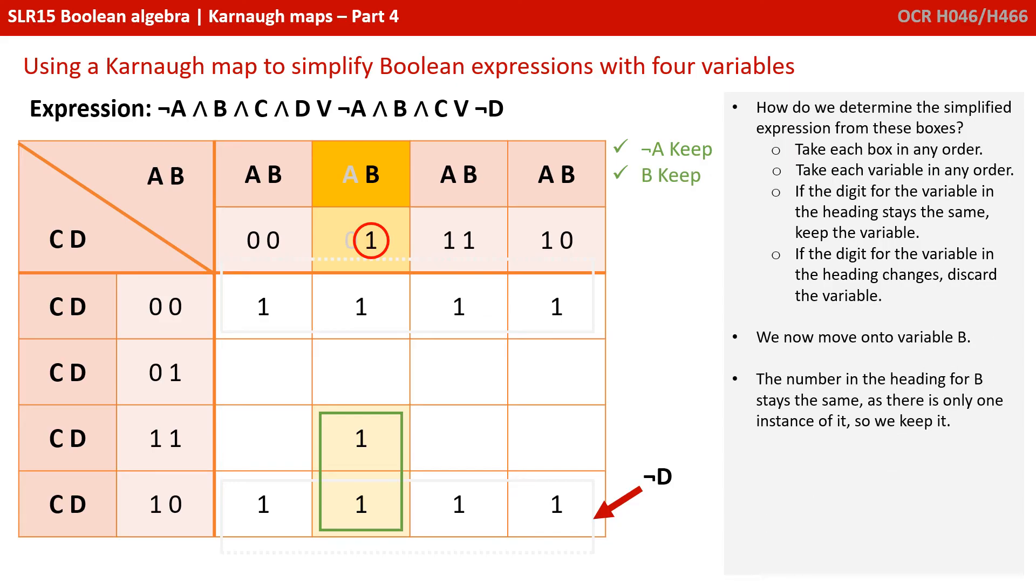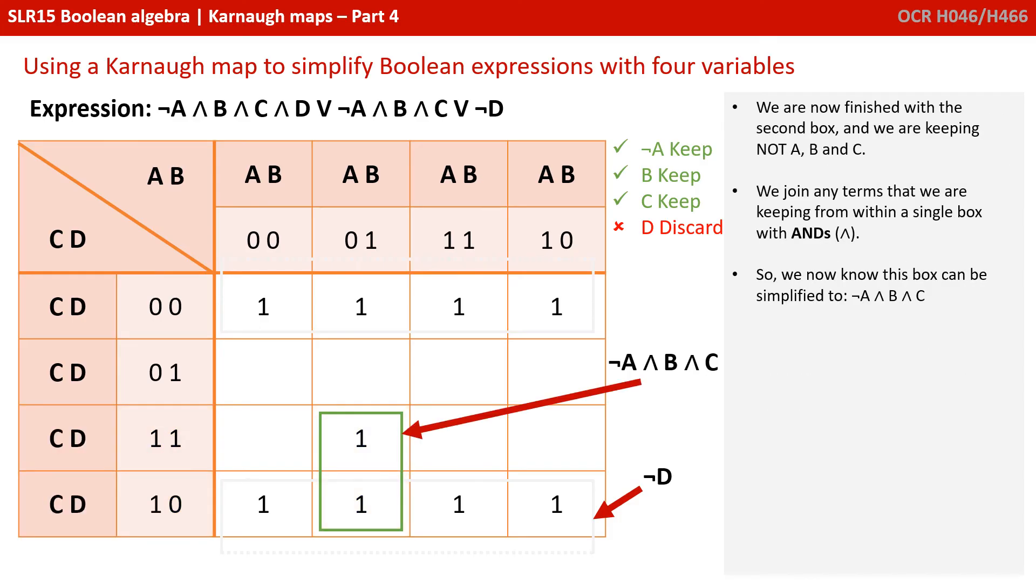We now move on to variable B. The number in the heading for B stays the same, as there's only one entry, so we keep it. And the number in the heading for C is staying the same, it's 1 in both cases, so we keep it. The number in the heading for D is changing from a 1 to a 0, so we discard it.